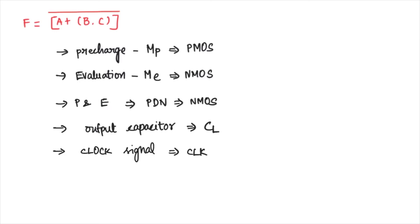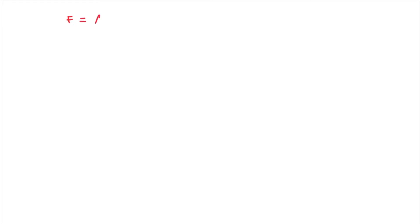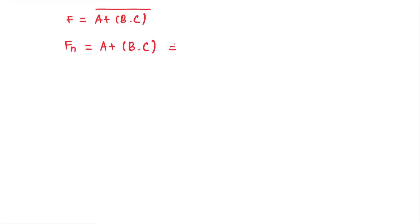These are the prerequisites for understanding dynamic CMOS design. To implement the PDN logic for f = (a + b·c)̄, we are going to implement only the pull-down logic. We are not bothered about the pull-up network. We calculate fn, where fn is obtained by taking a complement of the given function so that we can get the NMOS pull-down network. This expression denotes the pull-down network.